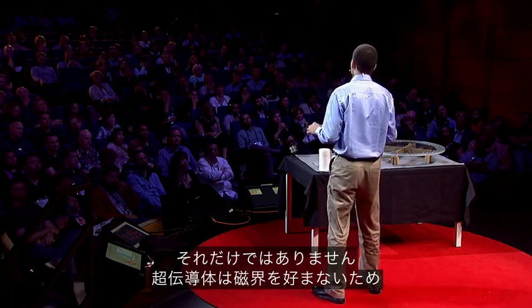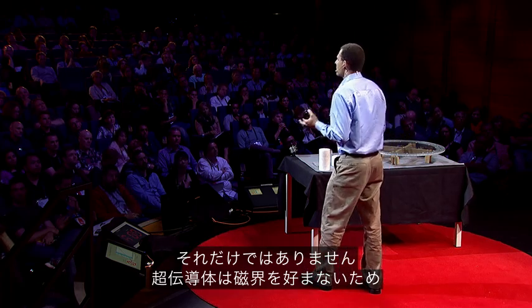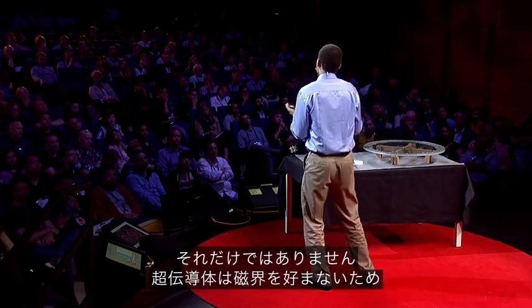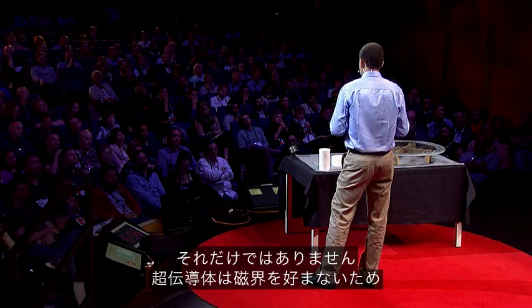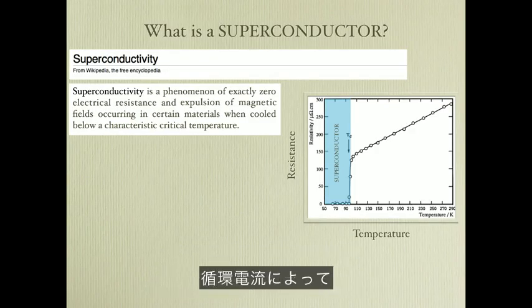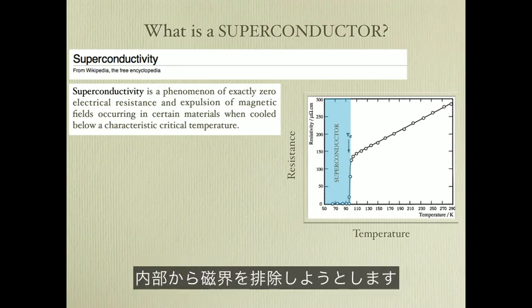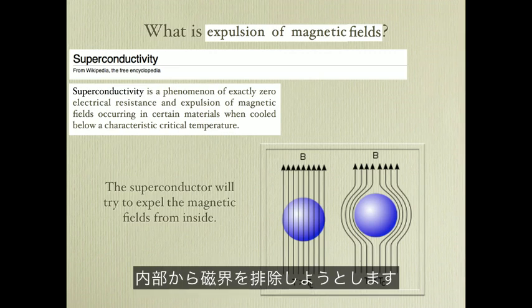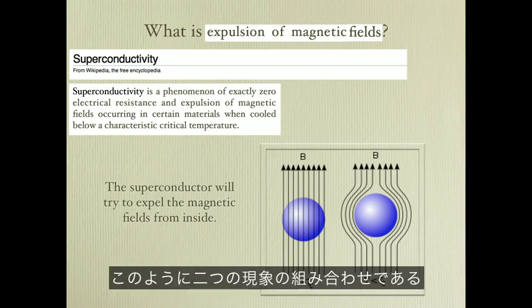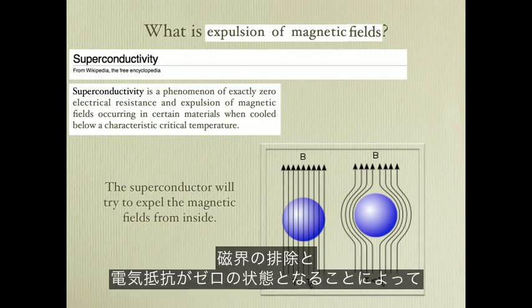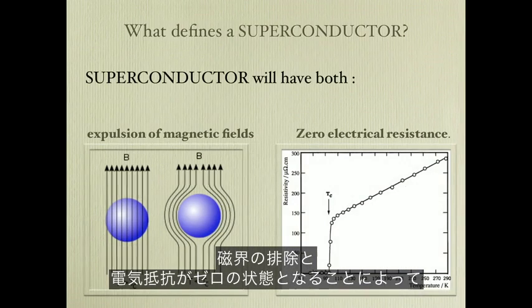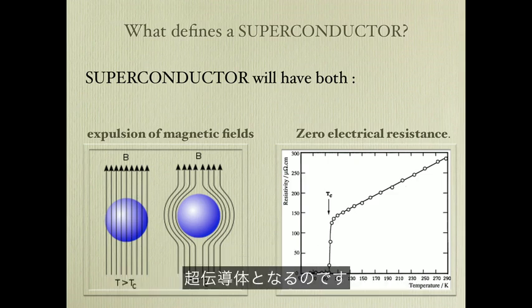But that's not all. Superconductors don't like magnetic fields. A superconductor will try to expel magnetic fields from the inside, and it has the means to do that by circulating currents. The combination of both effects — the expulsion of magnetic fields and zero electrical resistance — is exactly what defines a superconductor.